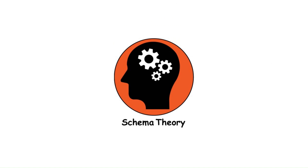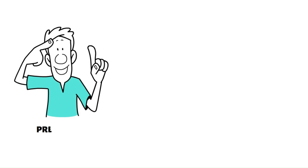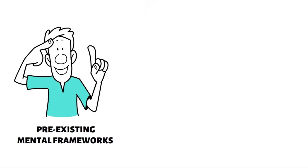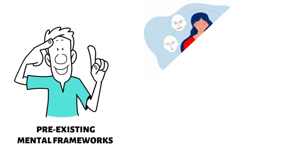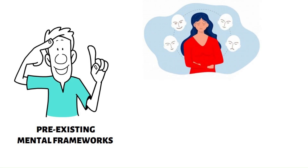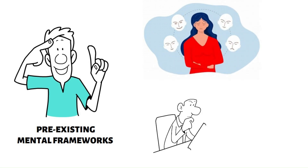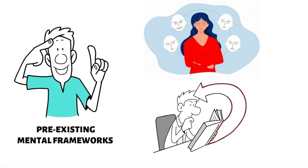Schema Theory proposes that individuals organize and interpret information based on pre-existing mental frameworks or schemas. These schemas influence perception, memory, and behavior by guiding how individuals encode, process, and retrieve information.